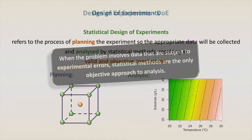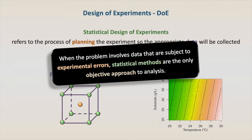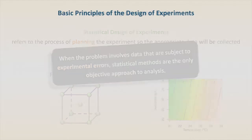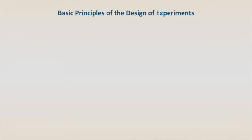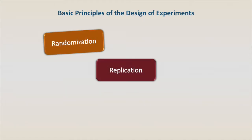When the problem involves data that are subject to experimental errors, statistical methods are the only objective approach to the analysis. The design of experiments is based on three basic principles: randomization, replication, and blocking.